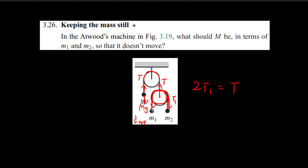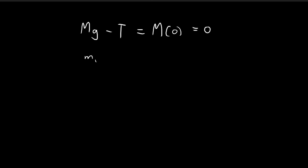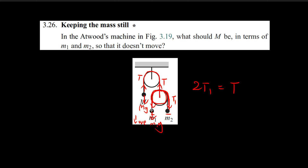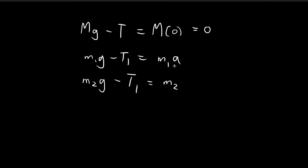Now we can use T1 to figure out the equations of motion for these two masses. We have the downward gravitational force m1g minus the tension T1 pulling it upwards, equal to the mass times the acceleration, let's call it a. We can do the same thing for the other mass: the downward gravitational force minus the tension equals m2 times its acceleration. Because this mass M is staying still, if m1 goes down, m2 goes up, and vice versa. So the acceleration of both masses has the same magnitude but opposite direction — if m1 has acceleration a, then m2 has acceleration negative a.